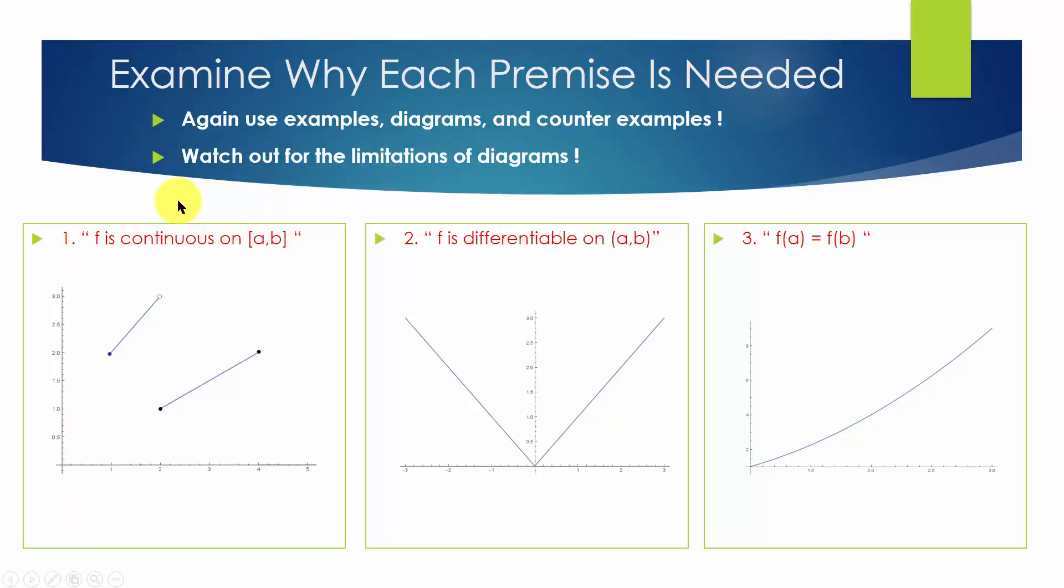The first premise is that f is continuous on closed interval [a, b]. Here, we are showing a function that is not continuous on closed interval [a, b]. This function still meets the other two premises,